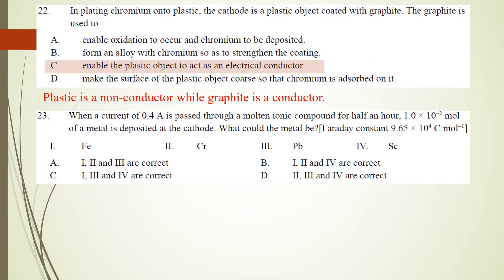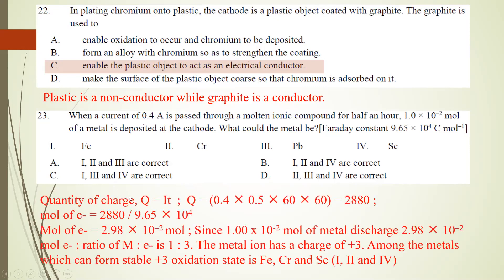Number 23: when a current of 0.4 A is passed through a molten ionic compound for half an hour, 1.0 × 10^-2 mol of metal is deposited at the cathode. What could the metal be? You have to calculate the number of moles of electrons involved. Q = IT, so Q = 0.4 × 0.5 × 60 × 60 = 2880 C. Dividing by 9.6 × 10^4 gives 2.98 × 10^-2 mol of electrons.